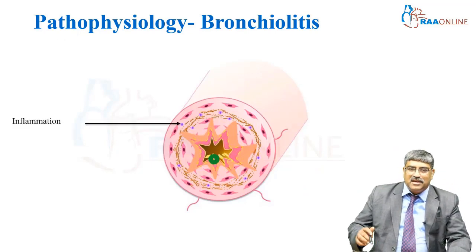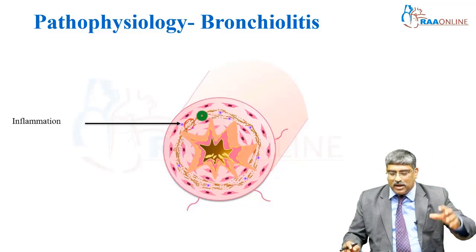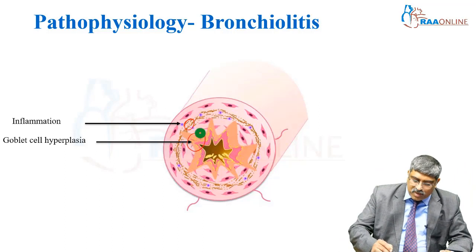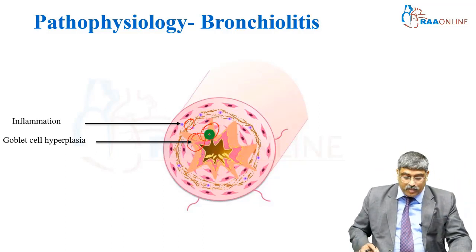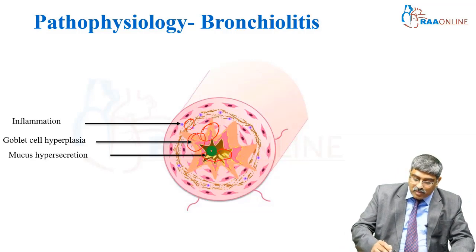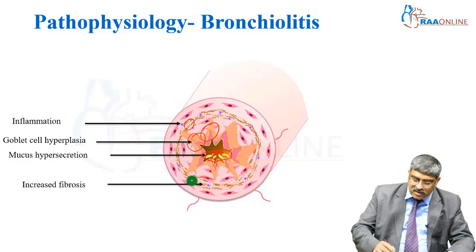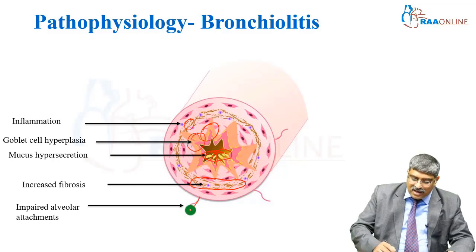Coming to bronchiolitis, that is a smaller airway disease. Here there is inflammation and infiltration with monocytes and neutrophils. There is goblet cell hyperplasia, which is more than what is seen in chronic bronchitis. You can see mucus hypersecretion going inside the lumen and narrowing it further. There is increased fibrosis and involvement of the alveolar attachments.